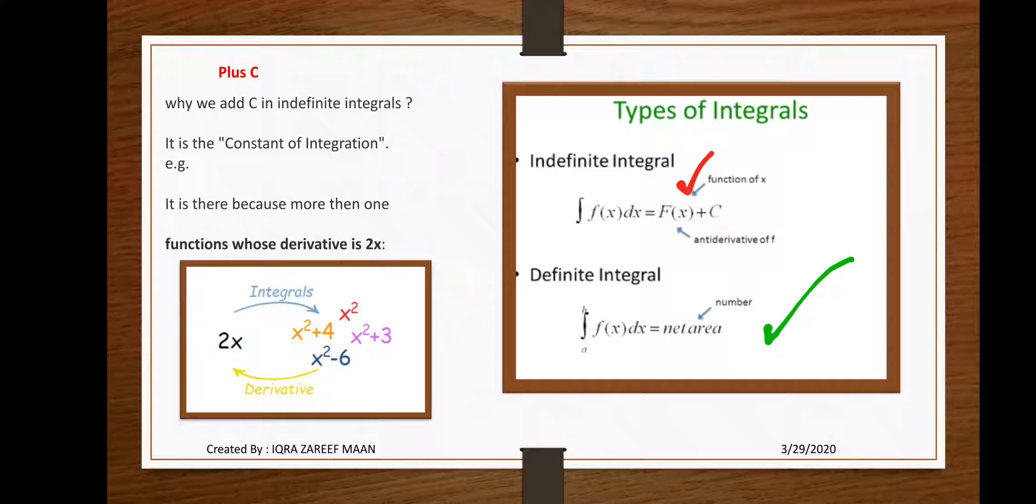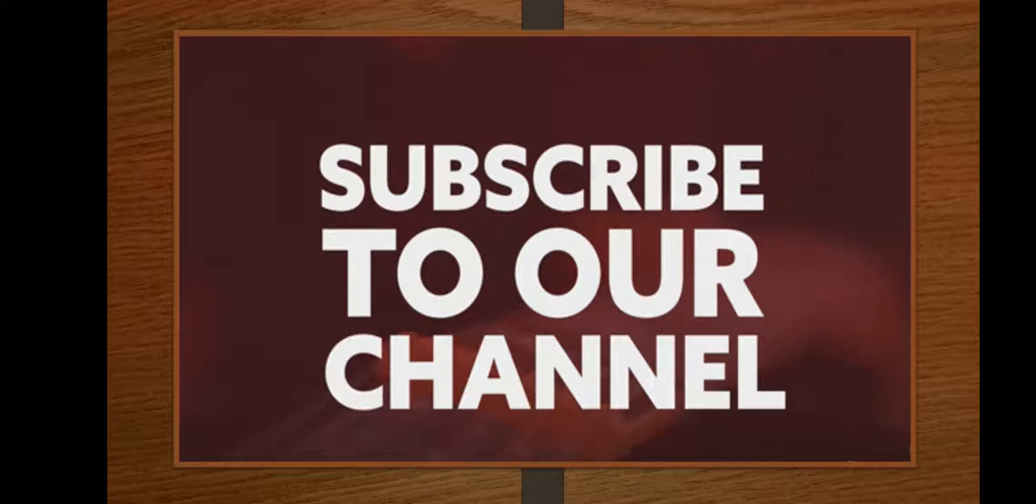In other words, we can say that F(x) is the integration value of f(x). Capital F(x) is the integration value of small f(x), or small f(x) is the derivative of capital F(x), because these two are inverse processes. In the next video we will discuss the properties and rules of integration with the help of examples. Thanks for watching. Subscribe to our channel for latest updates.